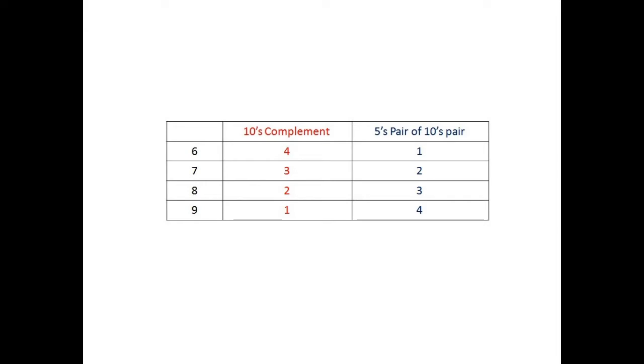6's ten's pair is 4, and 4's five's pair is 1, so 1 is a mixed complement of 6. We used a mixed complement where we could not have used a ten's complement to do the addition.